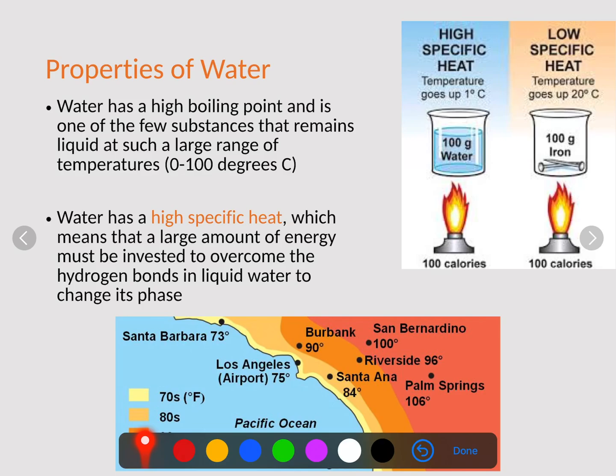If you want to look at it in terms of the ocean, in California it can get up to 100 degrees, but the water temperatures remain roughly the same. Here is San Bernardino, Palm Springs, 100 degrees, 106 degrees. But as we get closer to the water, notice how the temperatures become stabilized from water not being able to change forms.